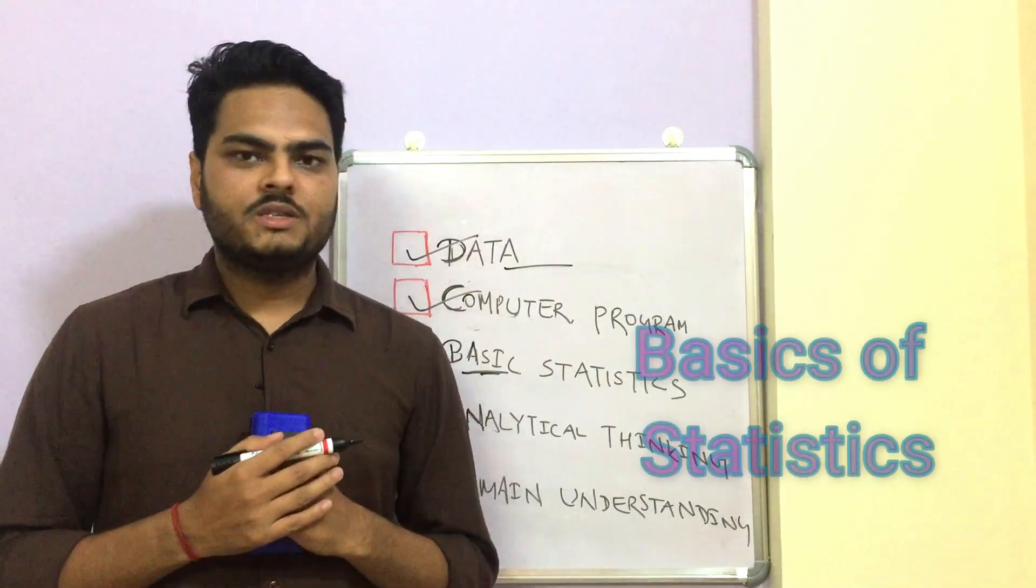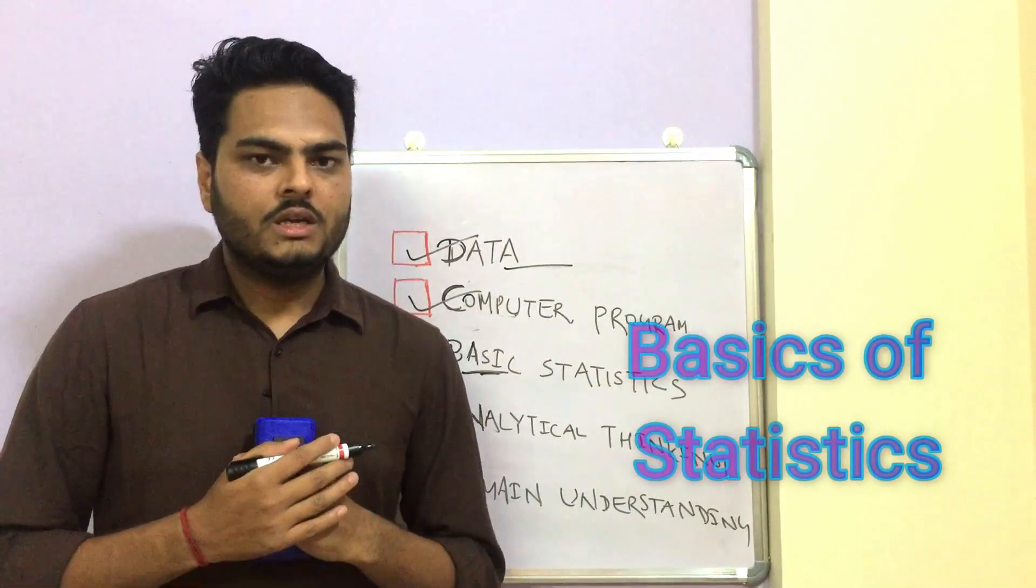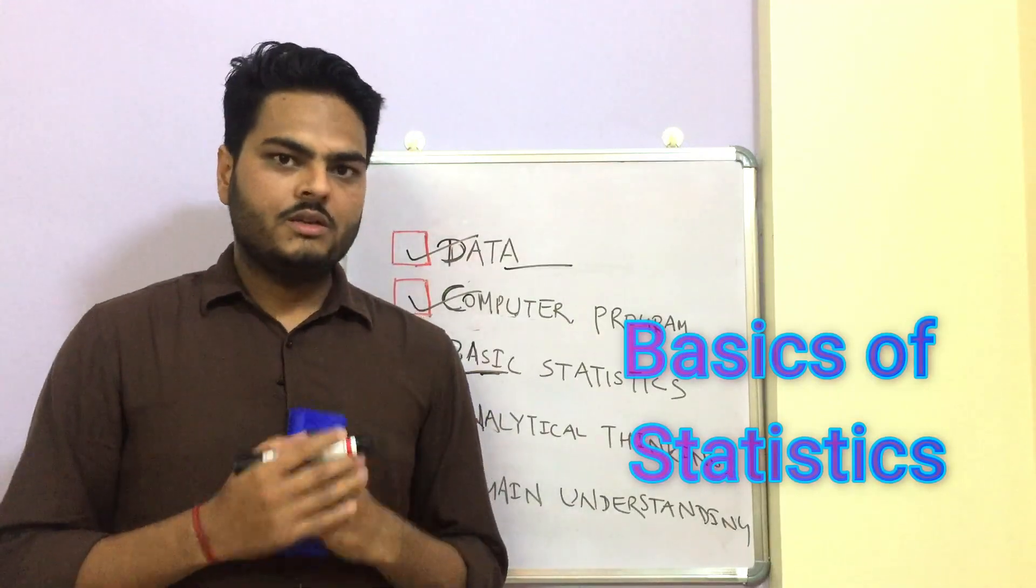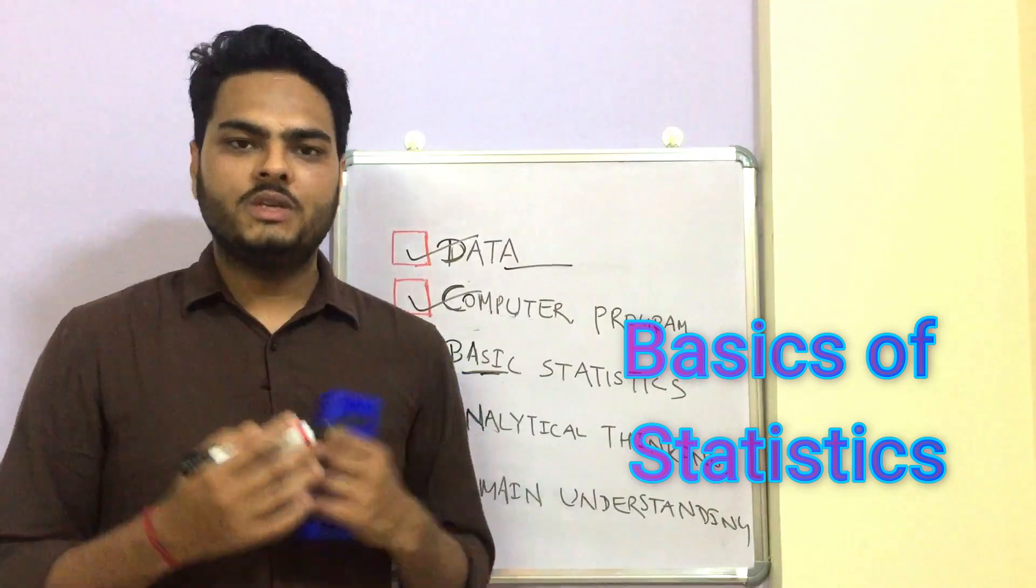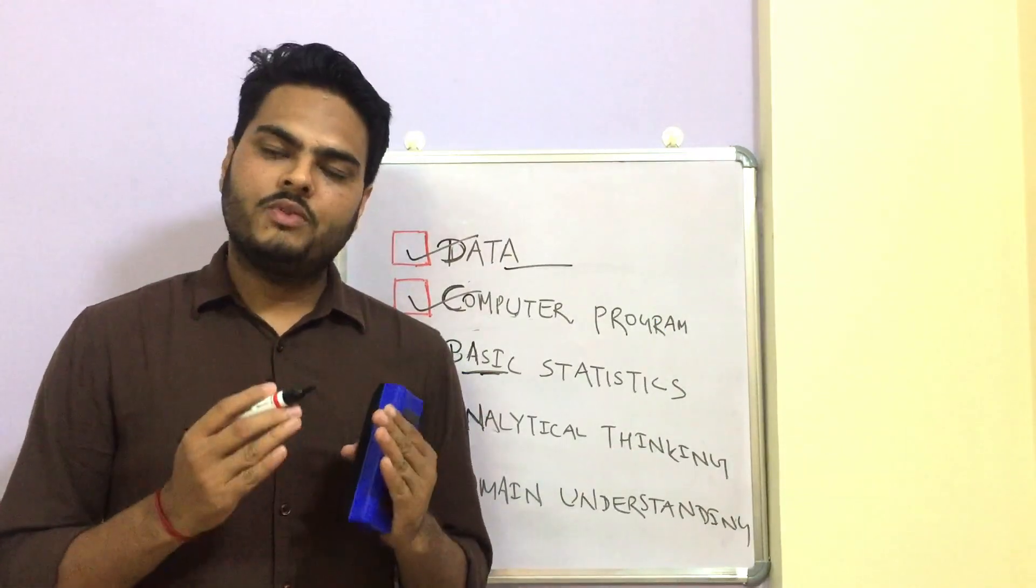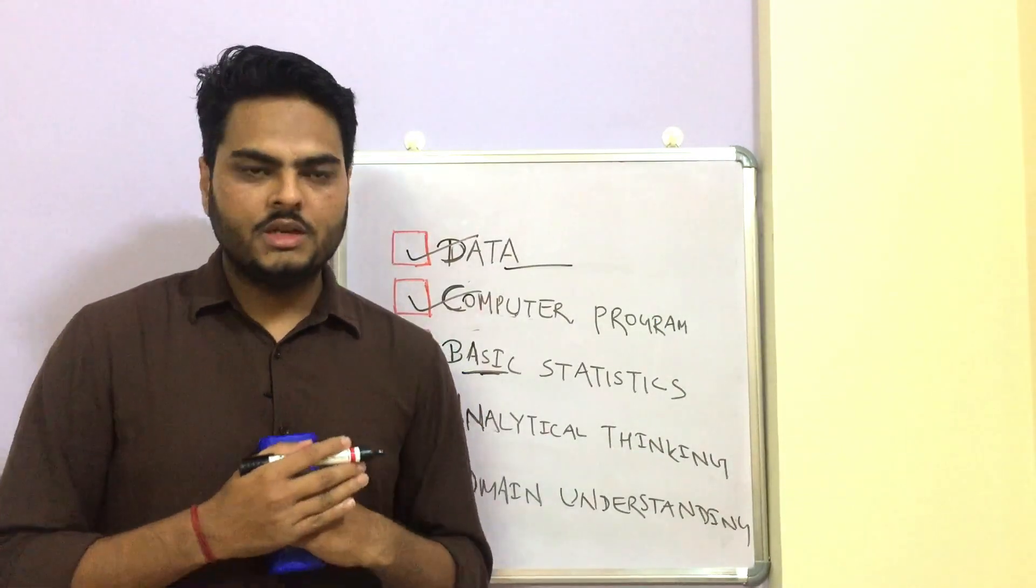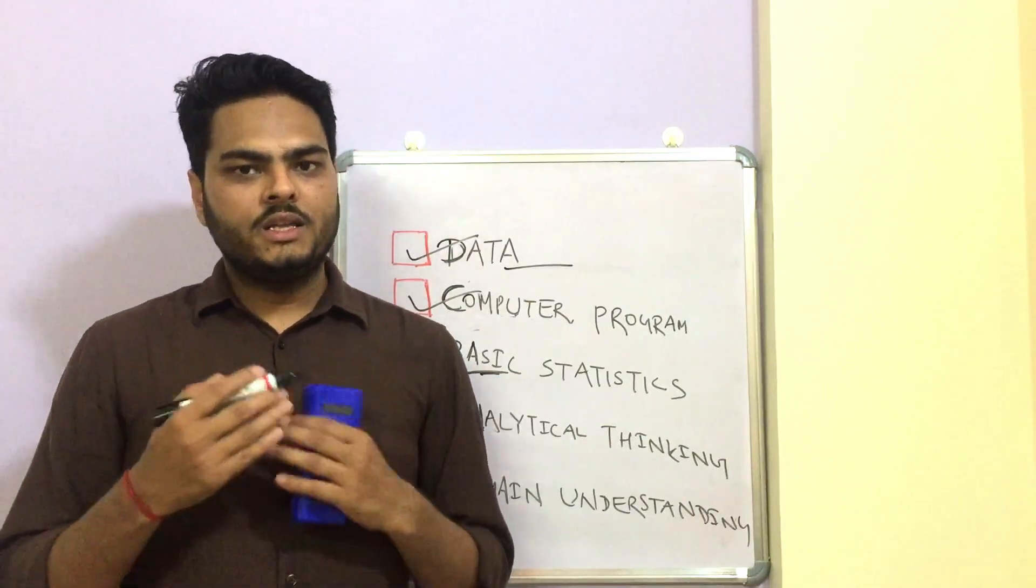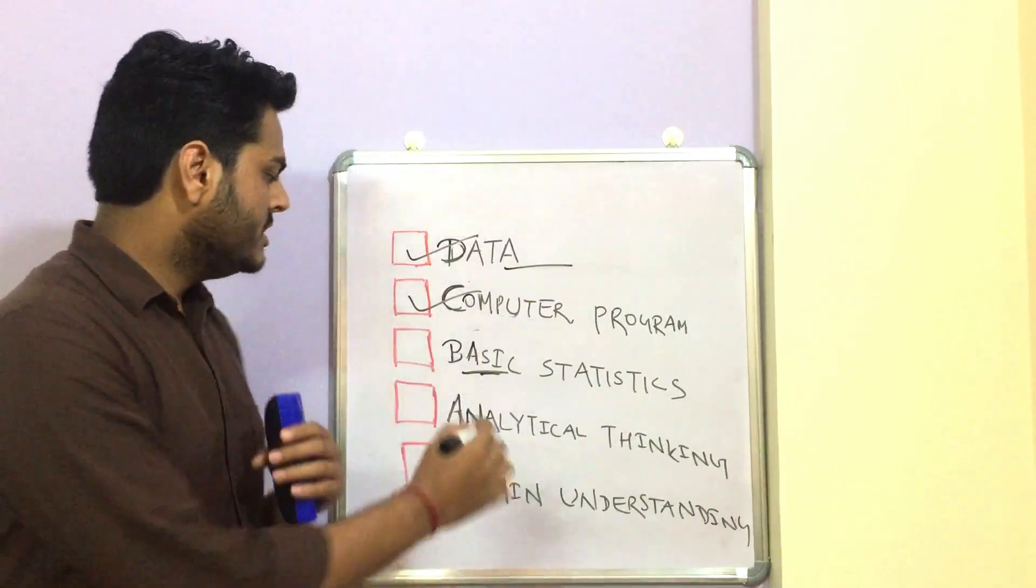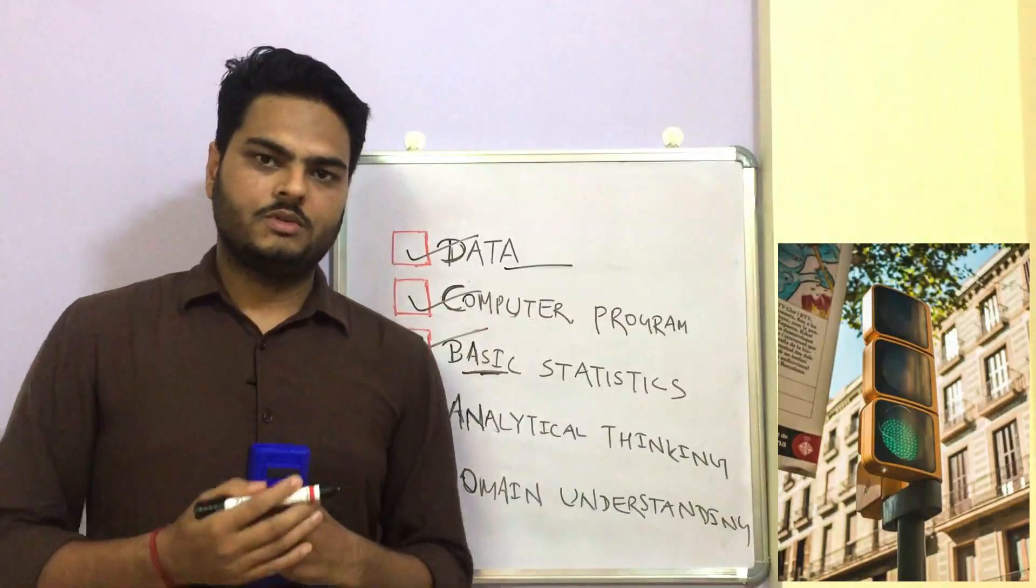But there are few basic things that we as data scientists must be aware of or must know. To name a few: log functions, probability, standard deviation, variances, normal distribution, probability distribution functions. If you find yourself uncomfortable with these terms, then take some time, spend some time on statistics and then ensure that this checkbox is checked for you.